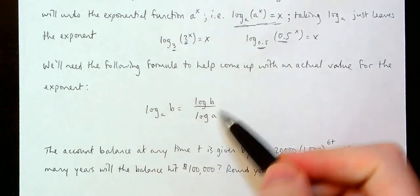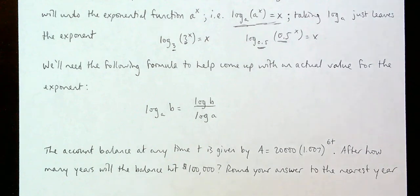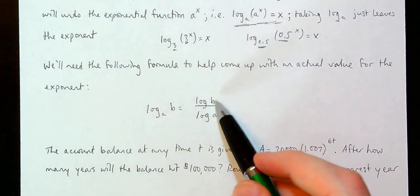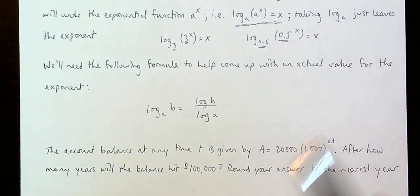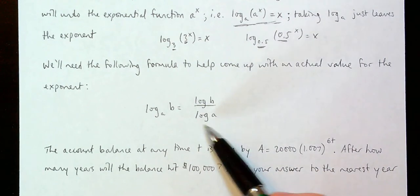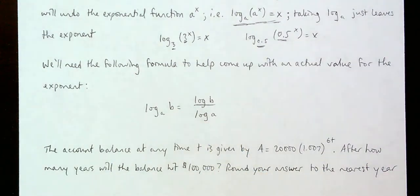The reason we write it as log b divided by log a is because on your calculator there is a button that looks like 'log.' You hit that button, type in your b value, hit enter, and you get a decimal for log of b. Do the same for log of a, take the quotient, and you have a decimal representation. So let's see how we use all these things to solve a similar kind of problem.